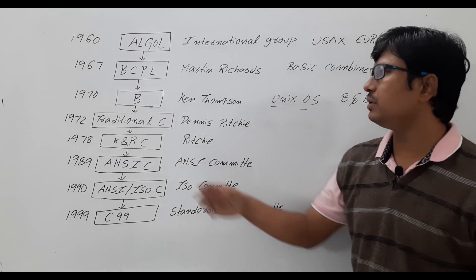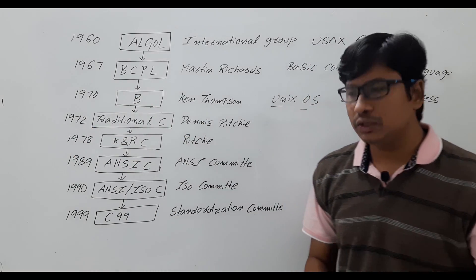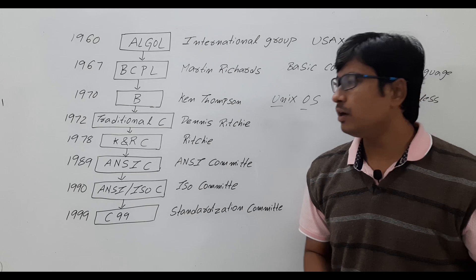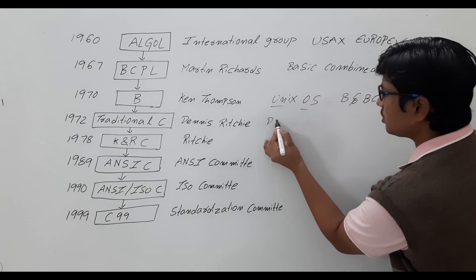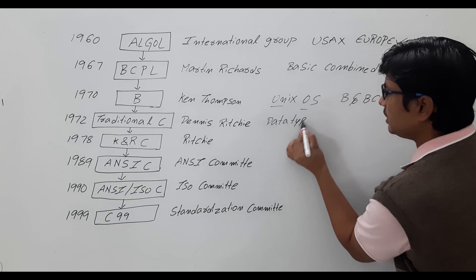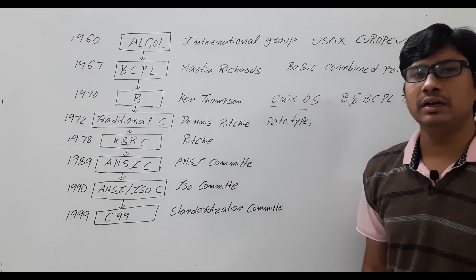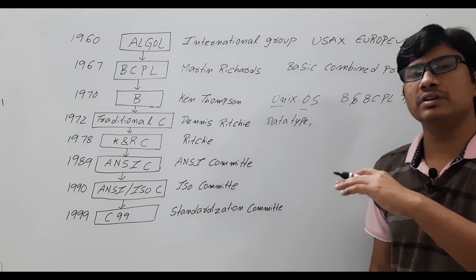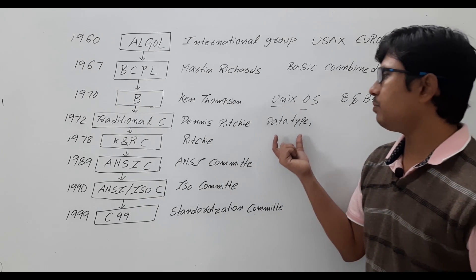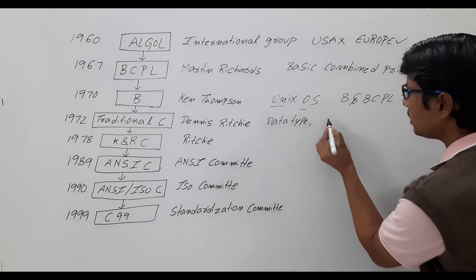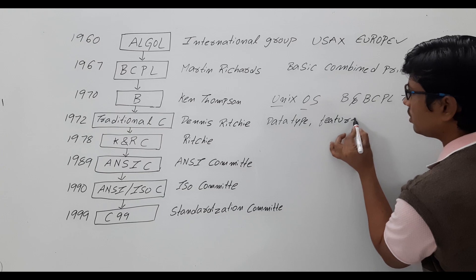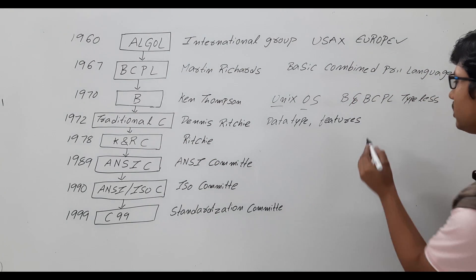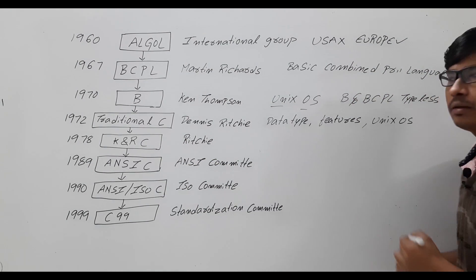In 1972, Dennis Ritchie developed a programming language called traditional C. The key modification he introduced was the concept of data types — int, float, char, double, and even user-defined data types such as structures and pointers. He also added more powerful features that were not present in the B language. Using traditional C, they also started designing the Unix operating system at Bell Laboratories.